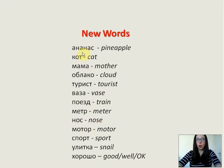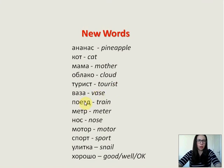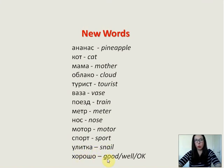Now let's repeat all the new words we learned today: ананас — pineapple, кот — cat, мама — mother, облака — cloud, турист — tourist, ваза — vase, поезд — train, метр — meter, нос — nose, мотор — motor, спорт — sport, улитка — snail, хорошо — good, well, okay.